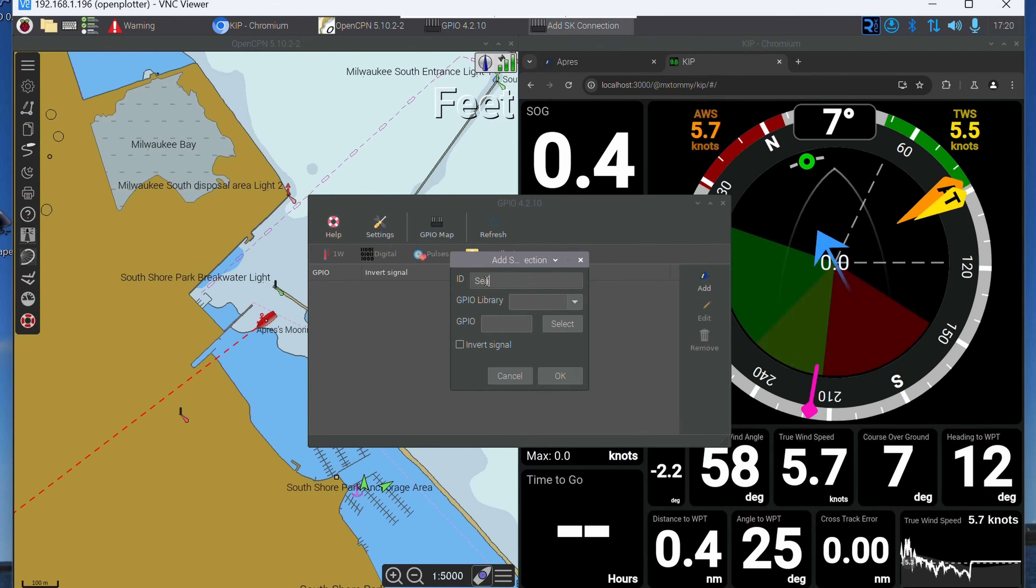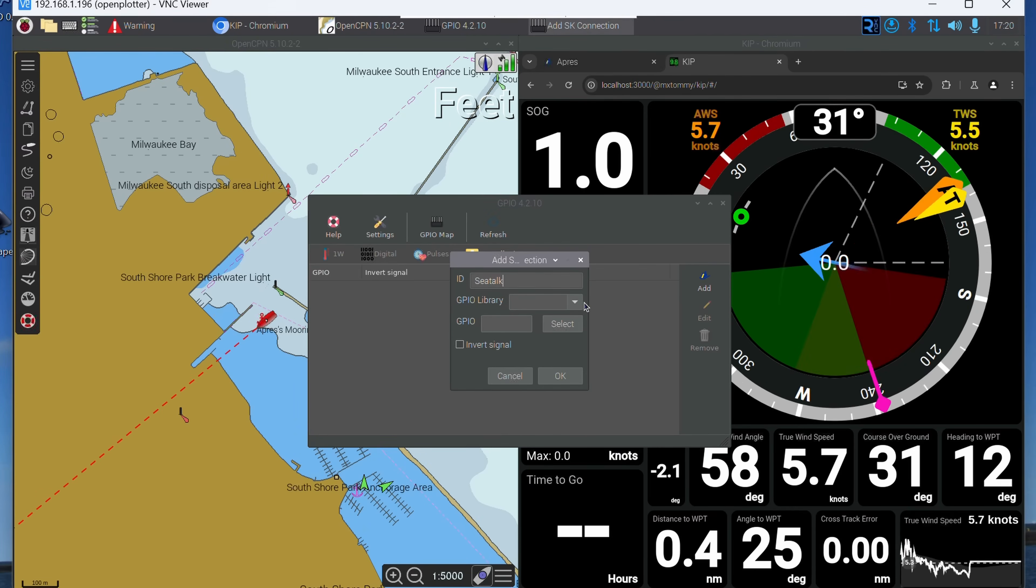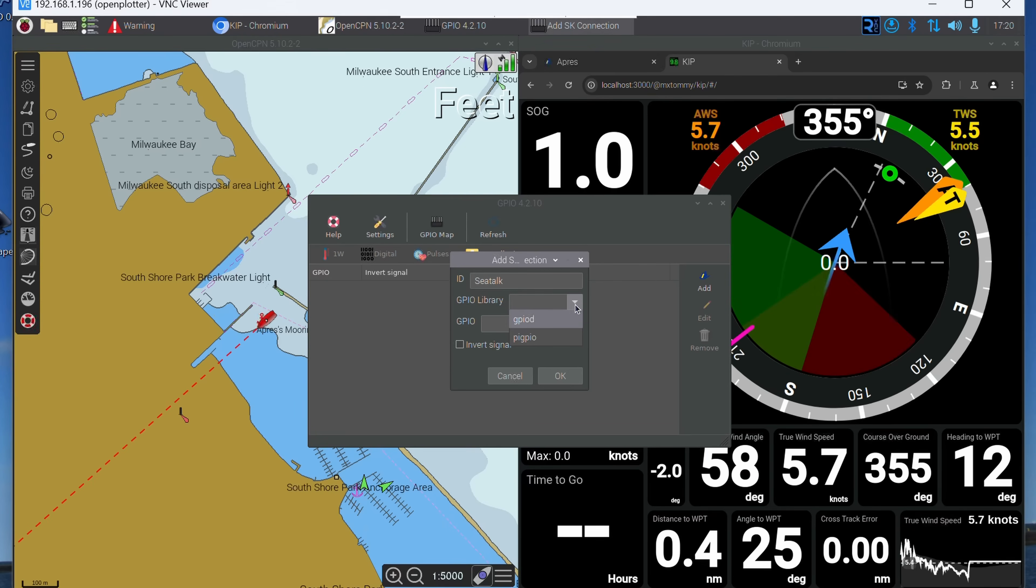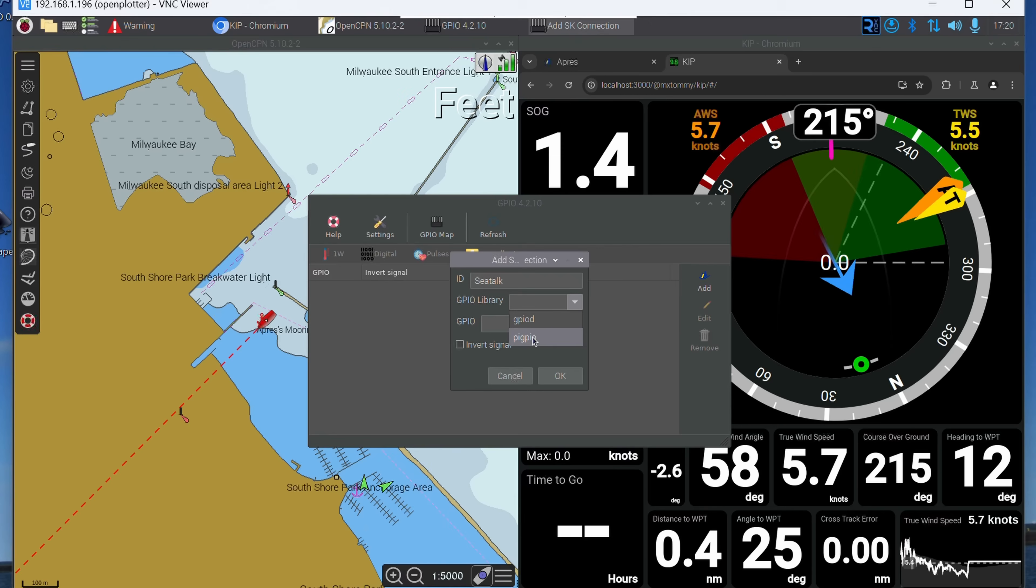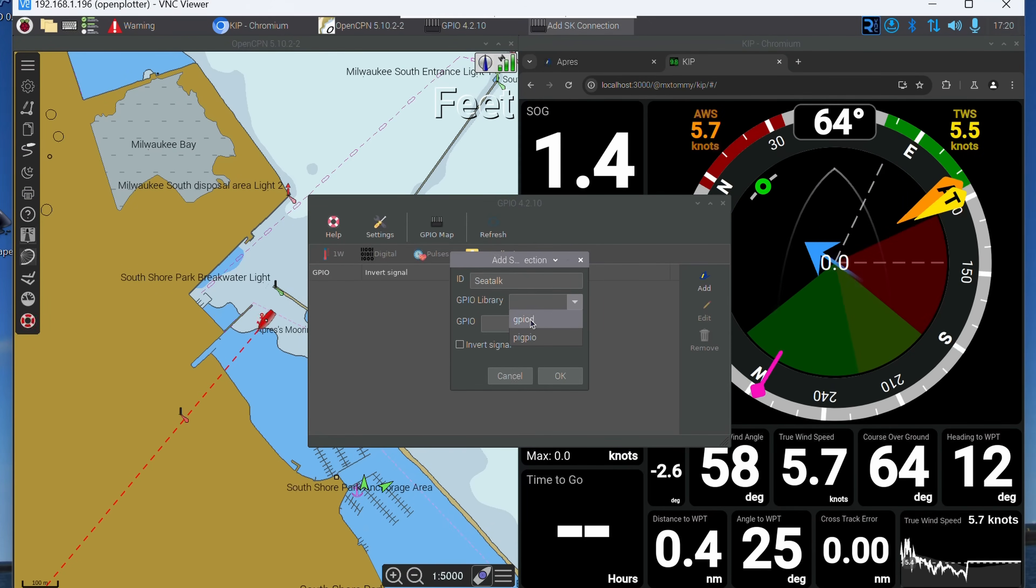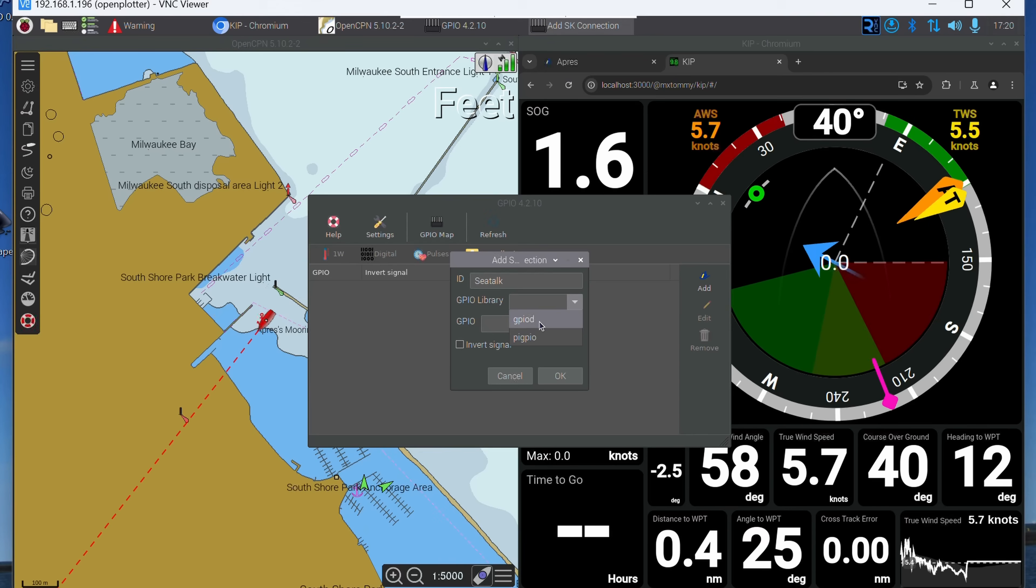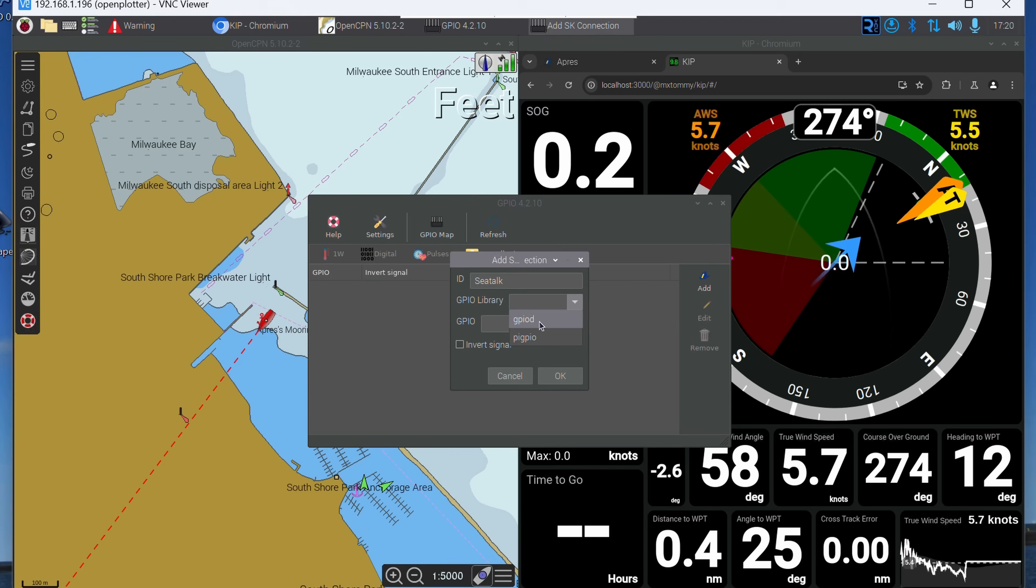We're going to call it SeaTalk and we are going to select which library we're going to use. If you're using an older system, you can use the PigPiod, but everything relatively new should use GPIO D. If you've got a Raspberry Pi 5, it must use GPIO D.